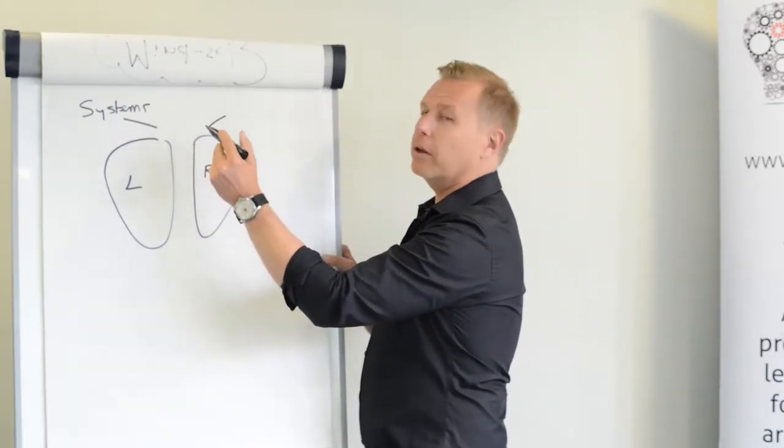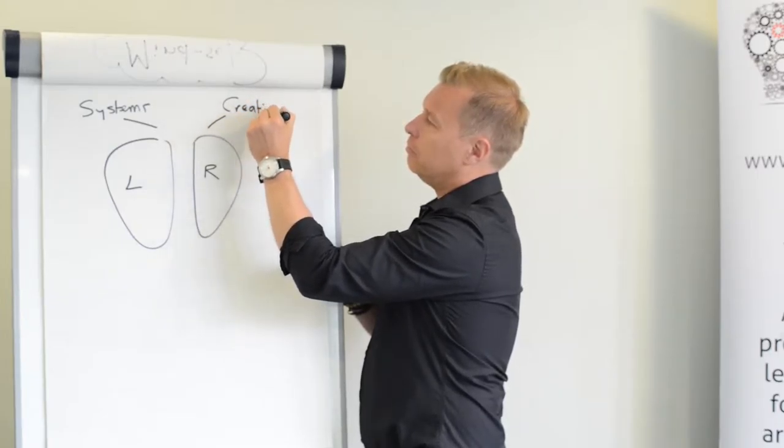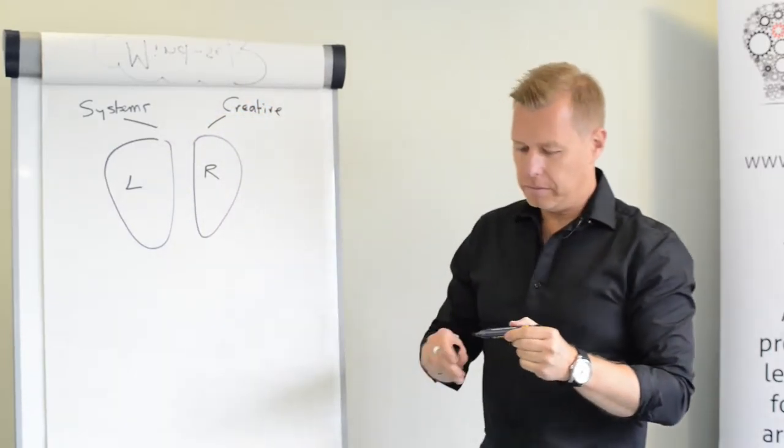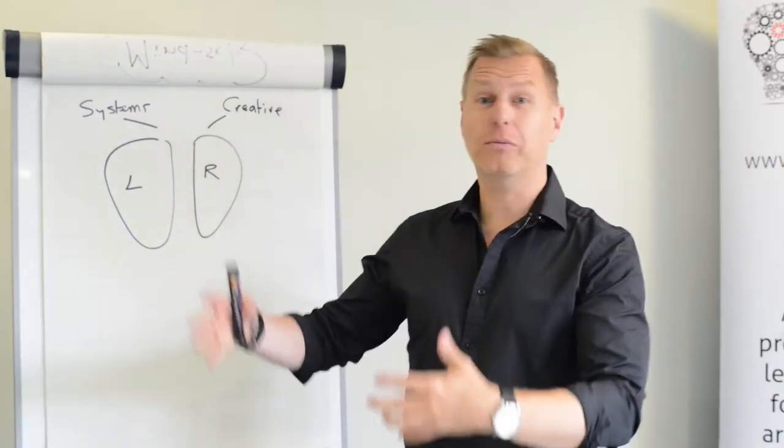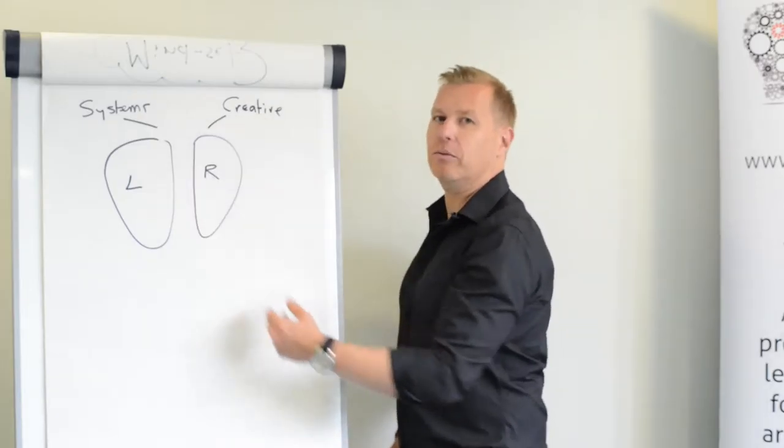Then you've got the right side of the brain, which is more about creativity and intuition. So if you enjoy sports, it's about spatial awareness. If you enjoy art, it's about colours, shapes, and forms. And if you like people, it's about connecting with individuals.